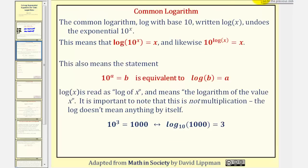For a very brief review on common logarithms, the common logarithm is log with base 10, written as log(x). And log(x) undoes the exponential 10ˣ. This means that log(10ˣ) = x. Again, the log undoes the exponential, and likewise, 10^(log(x)) = x. Again, these undo each other, leaving us with just x.